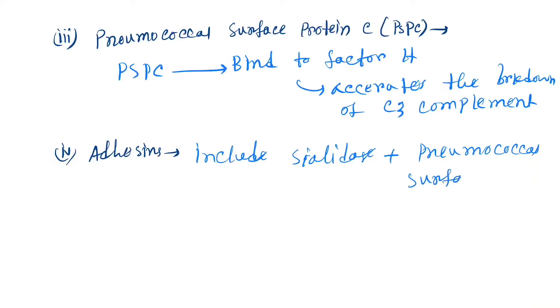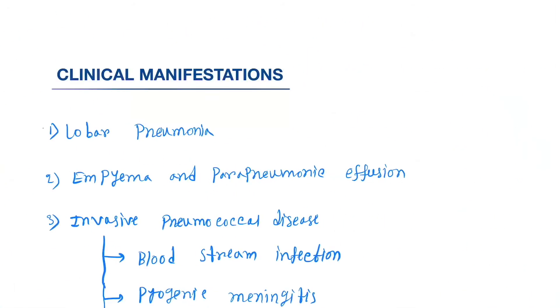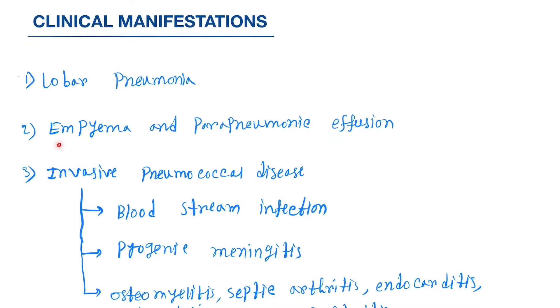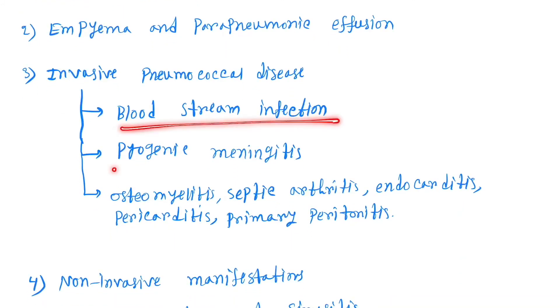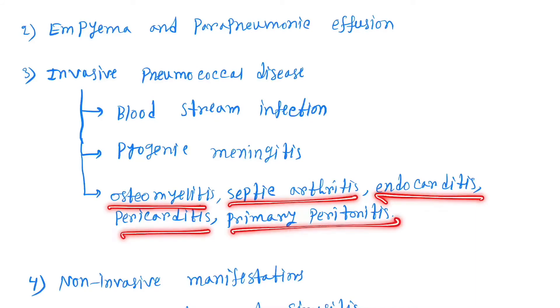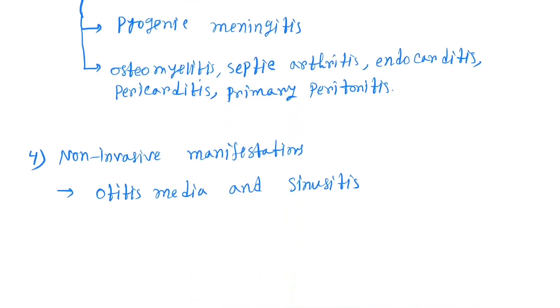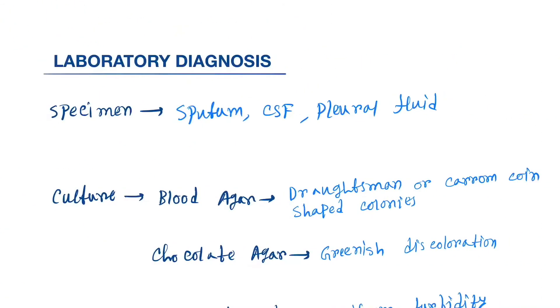Next is clinical manifestations. They do lobar pneumonia, empyema, this is the main clinical manifestation. Next is empyema and parapneumonic effusion, and invasive pneumococcal diseases. They are bloodstream infection, pyogenic meningitis, osteomyelitis, septic arthritis, endocarditis, pericarditis, and primary peritonitis. Next is non-pulmonary manifestations: otitis media and sinusitis.